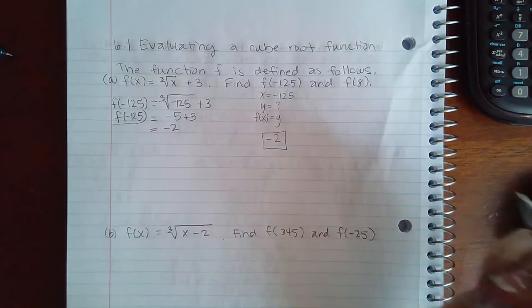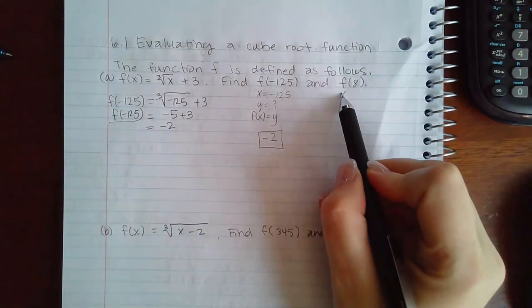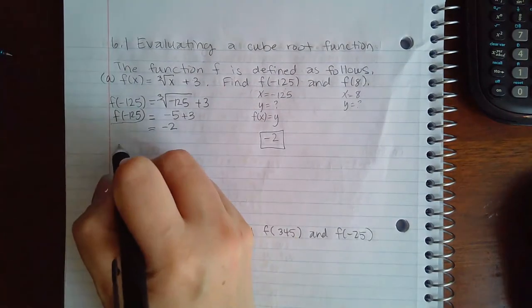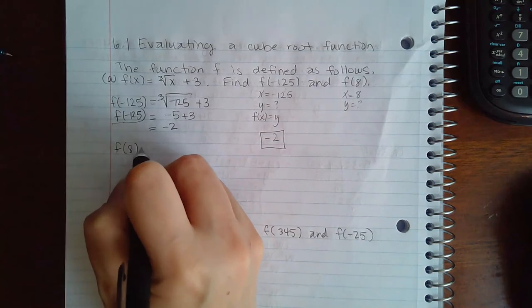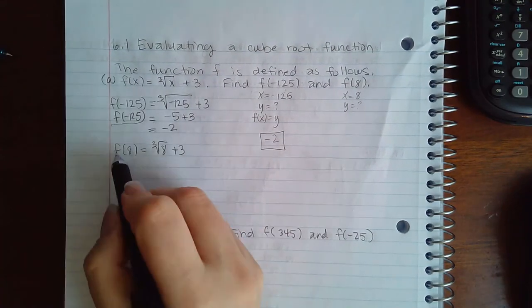For the other one, the x value is 8 and they're wanting to know what the y value is. So we're going to plug in 8 everywhere we see an x. This is just a label.